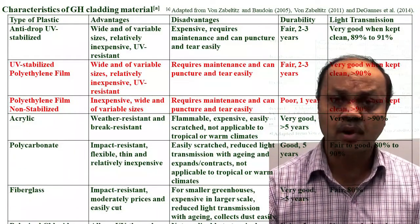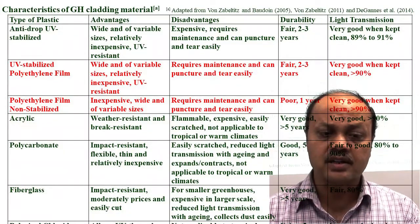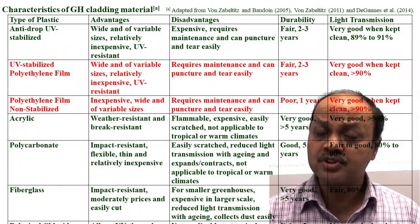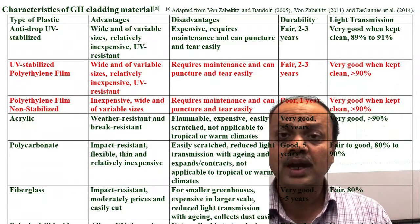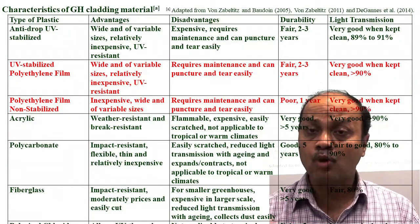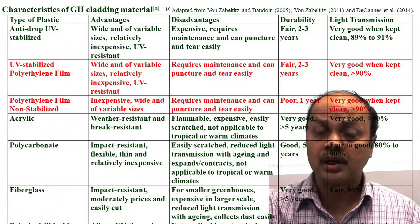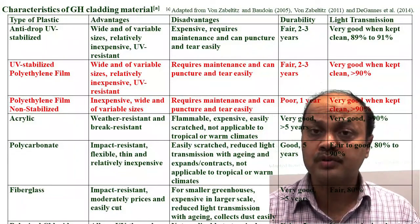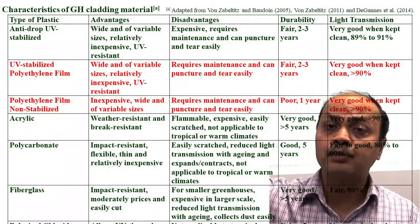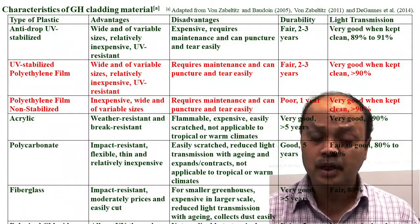A summary table compares various types of cladding materials by type, advantages, disadvantages, durability, and light transmission. Light transmission is very important because it determines how much photosynthetically active radiation reaches the crops. Another key parameter is how the cladding material handles infrared radiation — whether it allows long-wave radiation to escape the greenhouse, since if it does, the temperature-raising greenhouse effect is reduced.